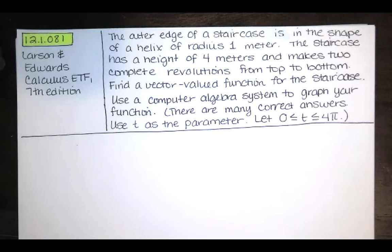We're asked to find the vector-valued function for the staircase and use a computer algebra system to graph our function. We're told that there are many correct answers. We're asked to use t as a parameter and let t go from 0 to 4π.